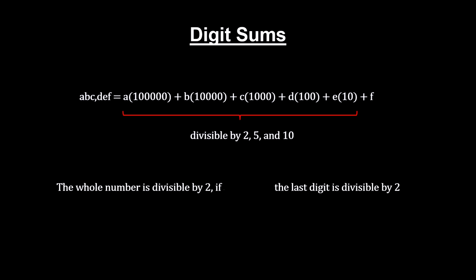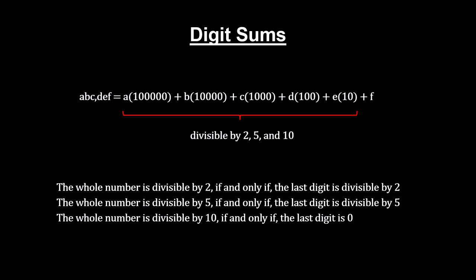This is why, if the last digit is even, the whole number is even. If the last digit is odd, the whole number is odd. If the last digit is divisible by five, then the whole number is divisible by five. And if the last digit is zero, the whole number is divisible by ten.